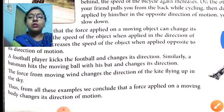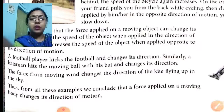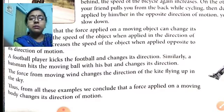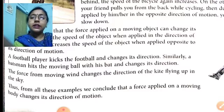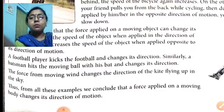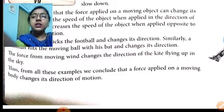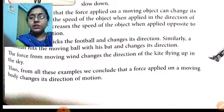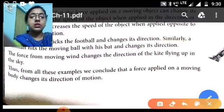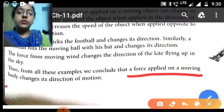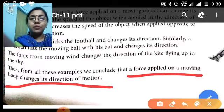A football player kicks the football and changes its direction. Similarly, a batsman hits a moving ball with his bat and changes its direction. The force from moving wind changes the direction of a kite flying in the sky. So the third effect is: force applied on a moving body changes its direction of motion.